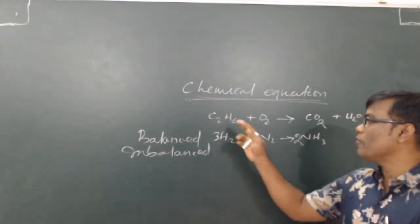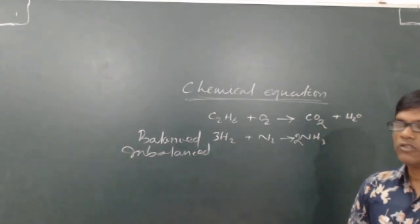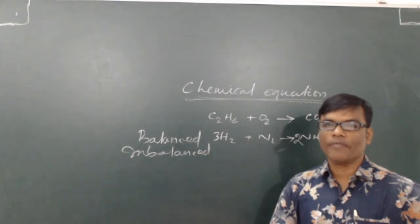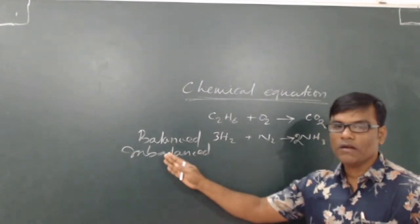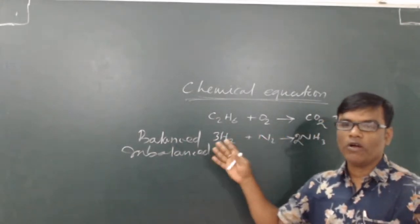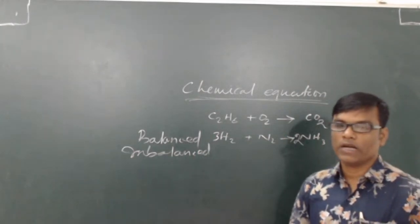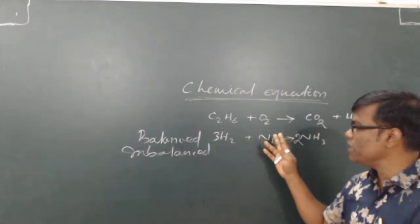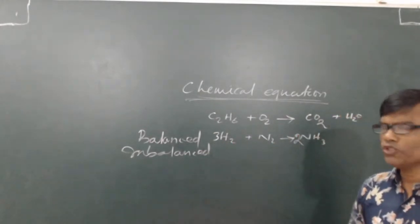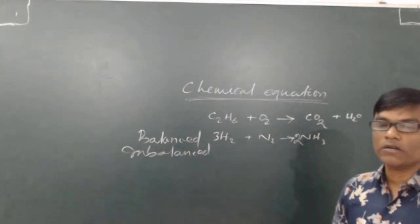If any one of the atoms on both sides is not the same, then it is called an imbalanced chemical equation. According to the law of conservation of mass, the mass before a reaction must be equal to the mass after the reaction — so the total mass remains unchanged. That is called the law of conservation of mass.